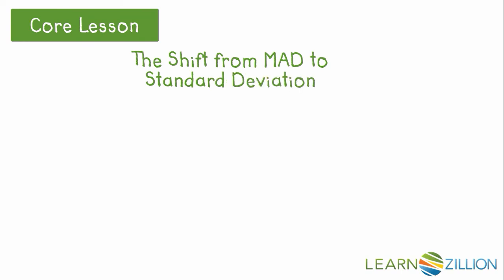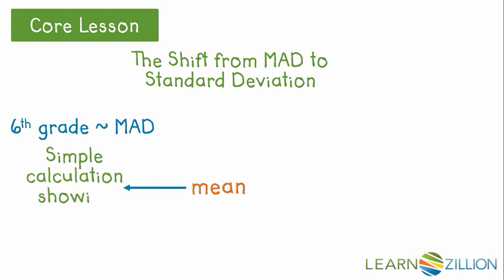The shift from MAD to standard deviation happens between 6th grade and high school. In this lesson, we looked at the calculation differences between MAD and standard deviation, and now here is a simple explanation of why we have to make that shift. First of all, we always start with the mean, and in 6th grade, you were introduced to a simple measure of variance known as MAD. It was a quick calculation showing how data varies about the mean.